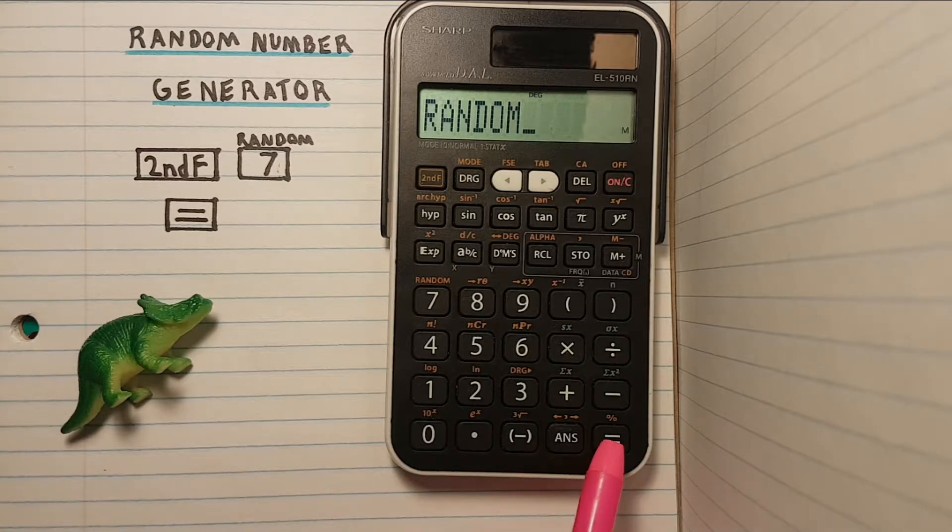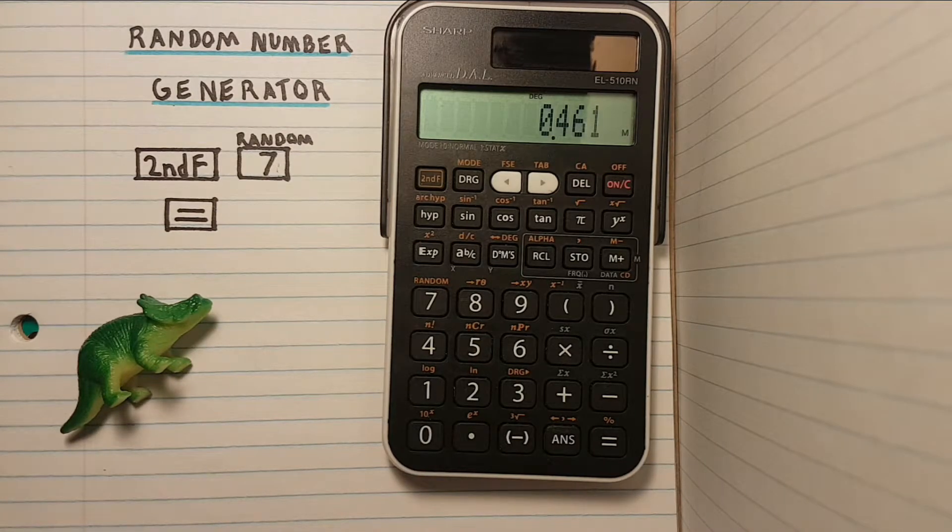We then hit the equal sign and a random three sig fig decimal appears on our screen. We can then hit the equal sign again and a new random number will appear.